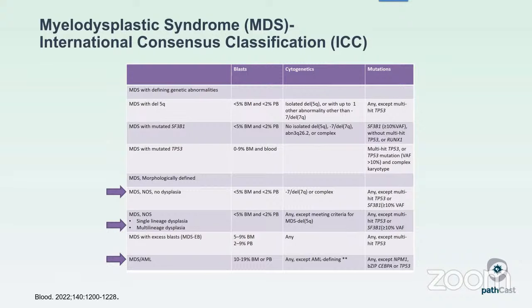The ICC is very similar, with the same genetic and morphologically defined categories with subtle differences. For MDS with SF3B1 mutation, the variant allele frequency required for SF3B1 here is 10%, whereas in the WHO it was 5%. The presence of a RUNX1 mutation excludes SF3B1 classification in the ICC. For MDS with mutated TP53, the ICC also requires multi-hit TP53 or biallelic inactivation, but the upper limit of the blast count is 9%, because once you cross that 9% threshold, you are in the MDS slash AML category.